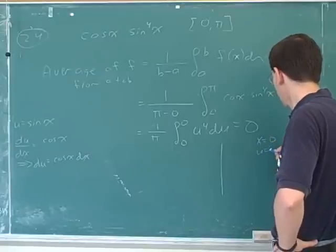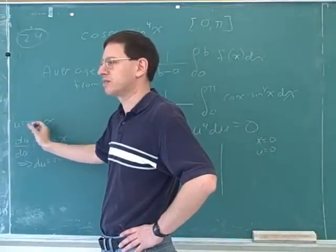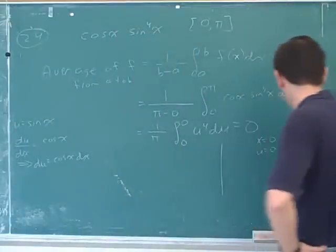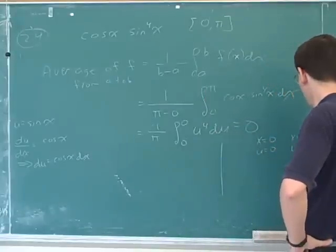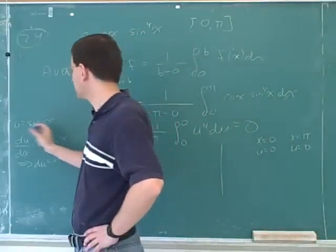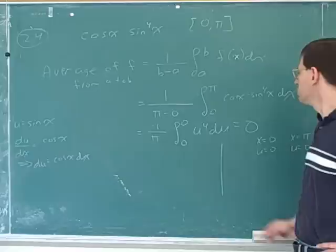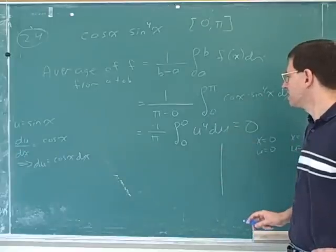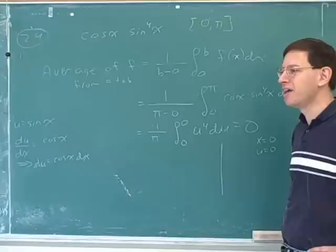Well, when x is zero, u would also be zero. You can see that from our definition of u. Sine of zero is zero. And when x is pi, at the upper limit of integration, u would be zero there as well, because the sine of pi is zero.